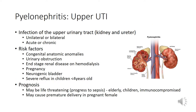Upper urinary tract infections, or pyelonephritis, are infections of the upper urinary tract including the kidneys and ureters. These infections can be unilateral or bilateral, or they can be acute or chronic. Acute upper UTIs are an ascending infection from the bladder. Chronic upper UTIs usually have no specific pathologic explanation.